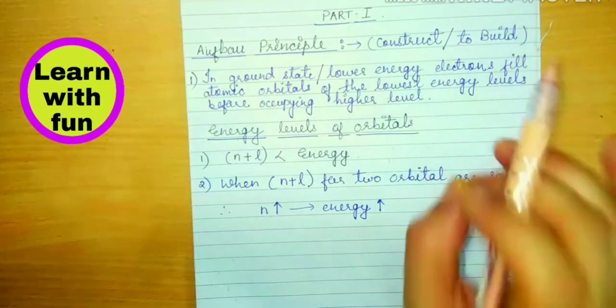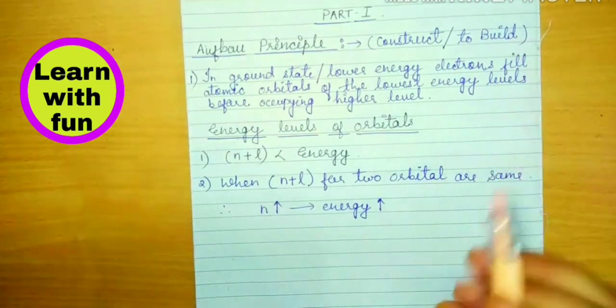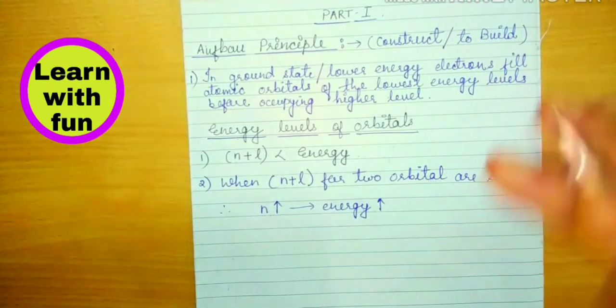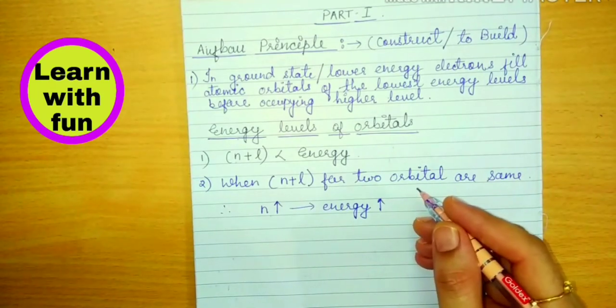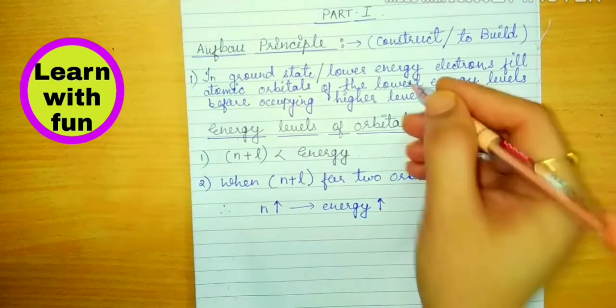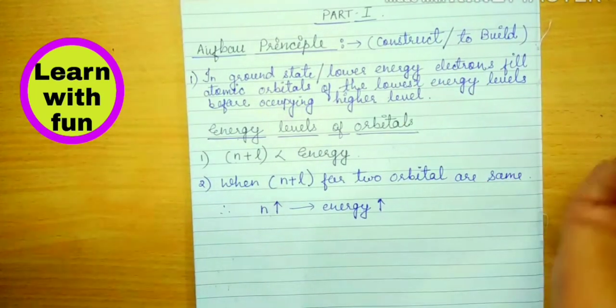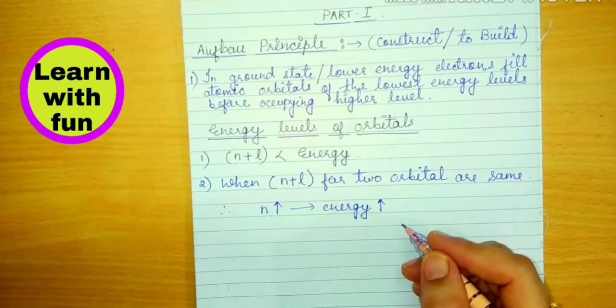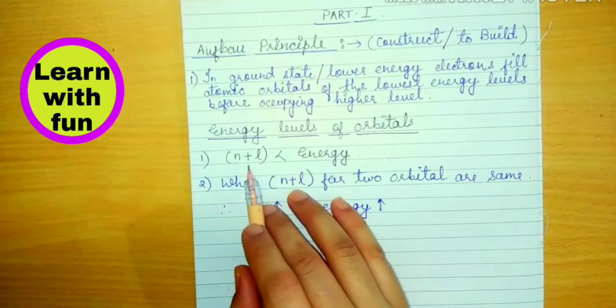The meaning of this sentence is how electrons fill. Lowest energy mein electron pehle fill hoga, then it will go to higher energy level. How do you know which orbital has less energy or which orbital has more energy?